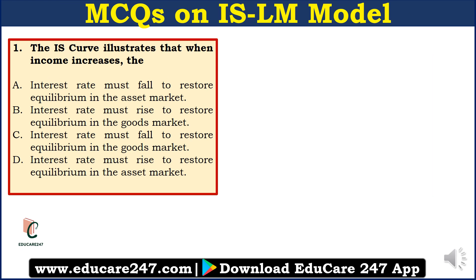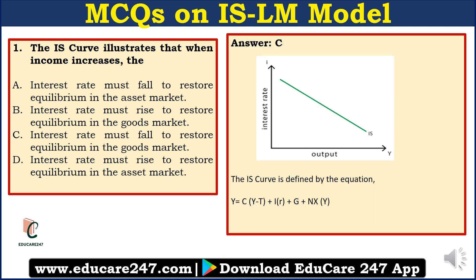Now moving on to question number 1. The IS curve illustrates that when income increases, the: A. Interest rate must fall to restore equilibrium in the asset market. B. Interest rate must rise to restore equilibrium in the goods market. C. Interest rate must fall to restore equilibrium in the goods market. Or D. Interest rate must rise to restore equilibrium in the asset market. The answer to this question is C — the interest rate must fall to restore equilibrium in the goods market. To understand this answer, let us understand the IS curve first.